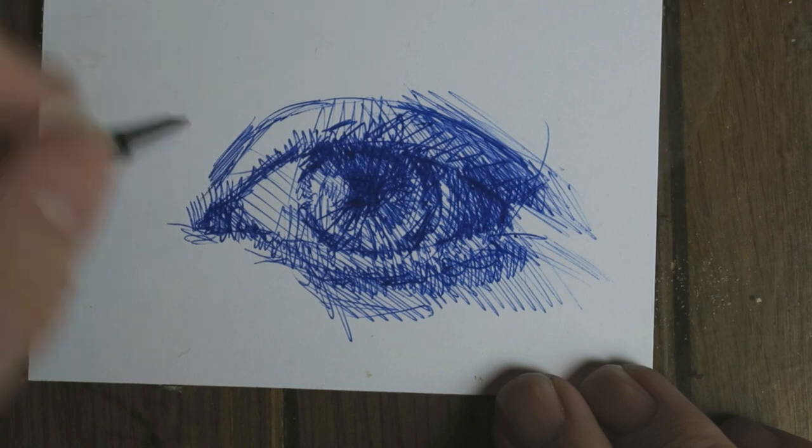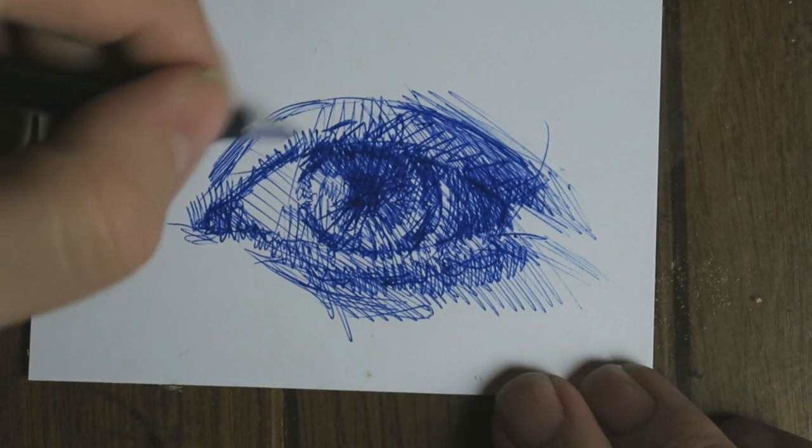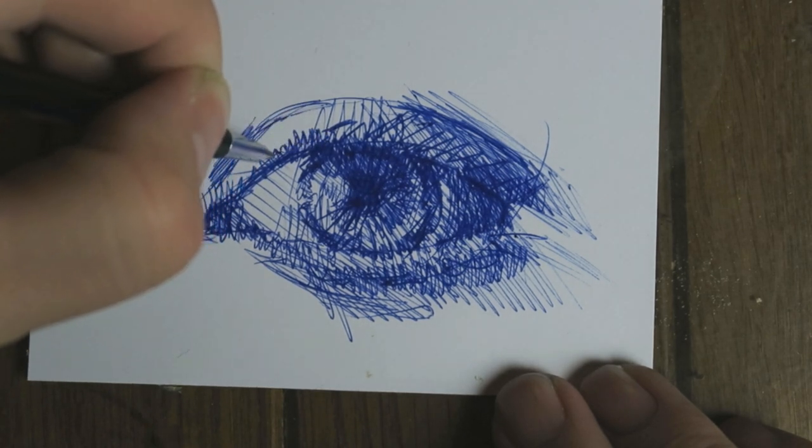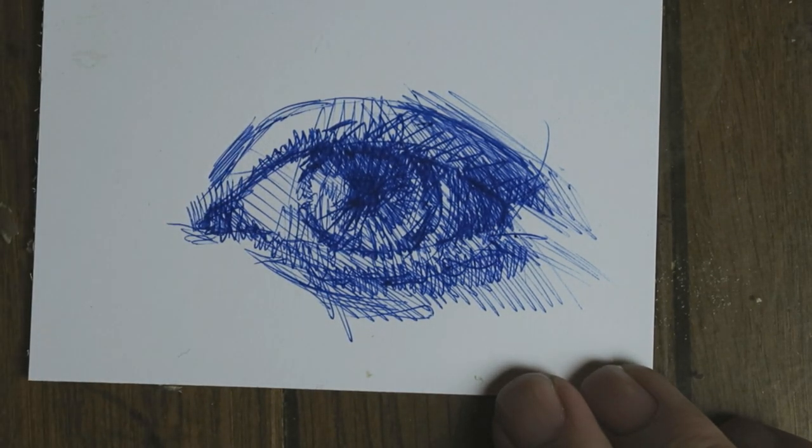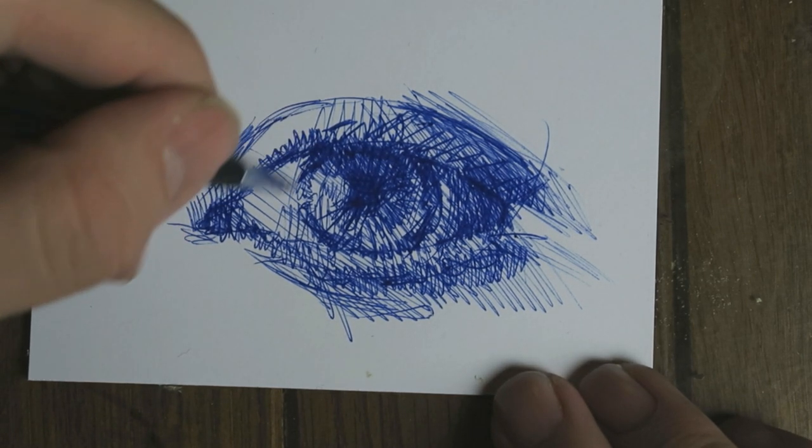As I go along you can see that the eye starts to take shape more and more and it gets a sort of three-dimensional appearance more than in the beginning. That's because a lot of shadow is added.